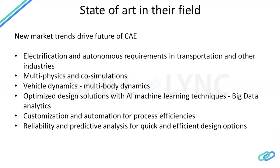The fourth area is optimized design solutions with AI and machine learning techniques. Artificial intelligence and machine learning are new tools being combined with CAE. When we find an optimized design, we run a number of simulations which give an optimized product. By combining artificial intelligence and machine learning, we can achieve faster and better-optimized designs.